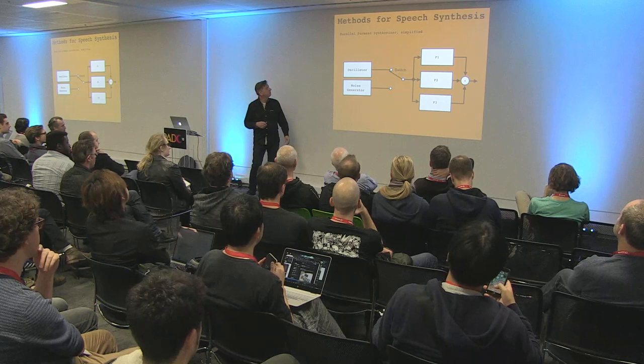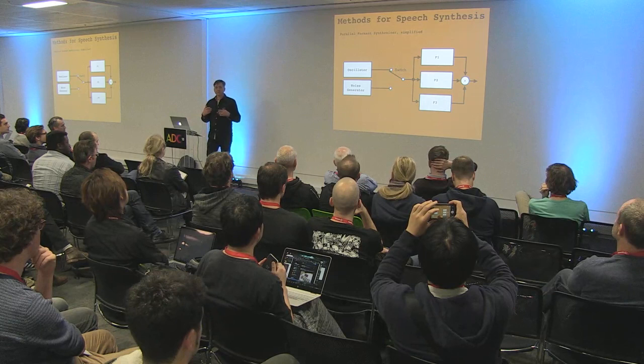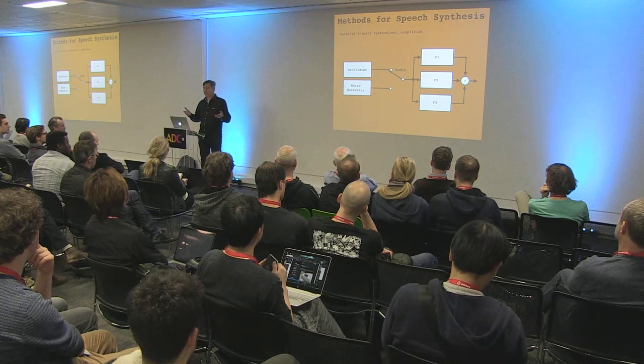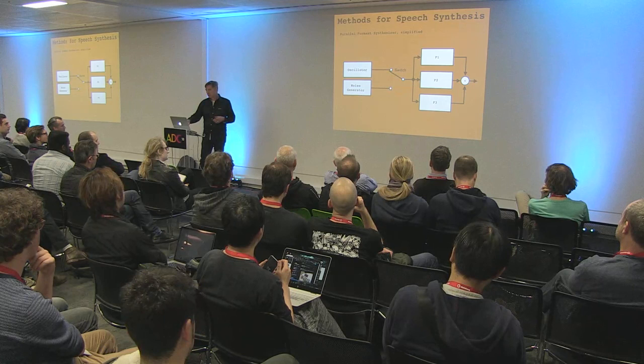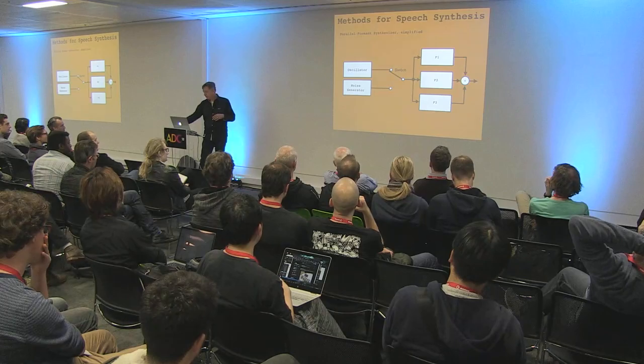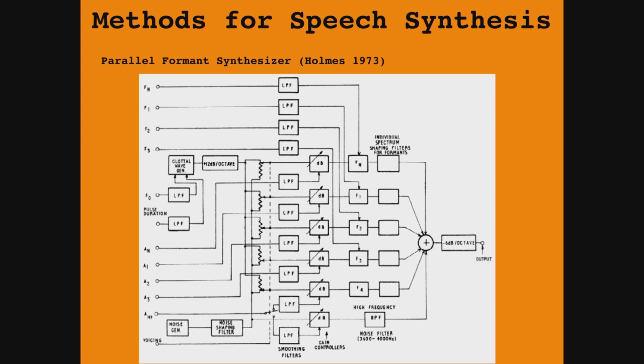A basic building block of a parallel formant synthesizer has an oscillator and a noise source with a switch, because voiced utterances like vowels and nasals use the oscillator, while unvoiced sounds like F and S use noise as the main carrier. There are three formant filters in parallel, and at the end everything is mixed to the output. Those filters are continuously controlled in frequency and amplitude, and the oscillator is controlled in pitch.